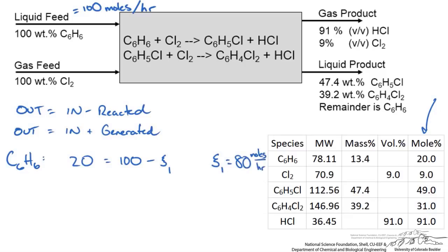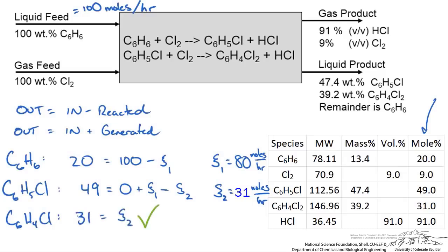I can write this now for the next species. For the chlorobenzene, we know that we have 49 moles that are leaving. We had nothing coming in. We generate from reaction 1 and we react from reaction 2. So our extent of reaction 1 minus our extent of reaction 2 should give us 49 moles per hour. This means that the extent of reaction 2 is 31 moles per hour. I can also write this for dichlorobenzene. For dichlorobenzene, it is just what comes out, which is 31 moles per hour, and this is equal to the extent of reaction 2.